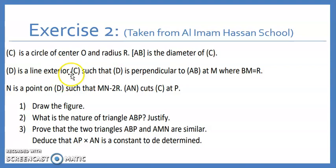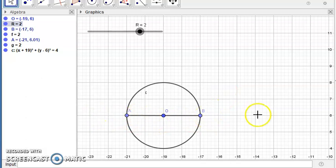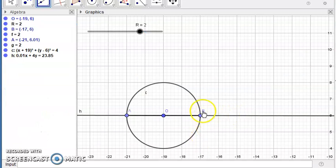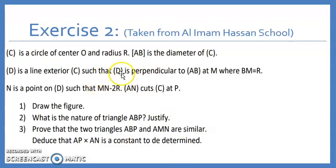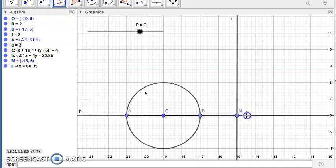Now D is a line exterior to C, so outside C, such that D is perpendicular to AB at M, where BM is equal to R. So the line D is perpendicular to the line AB and it's an exterior line. So let's extend the line AB. So this is the line AB. Now where should we locate M? Look back at the given. We know that BM is equal to R. So BM should be equal to R. So it's either here or here. But since the line is exterior to the circle C, then M should be here. So this is the point M. And now I'll draw the line D, which is exterior to C and perpendicular to AB at M. So this is D.